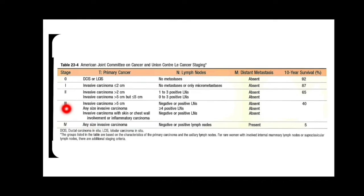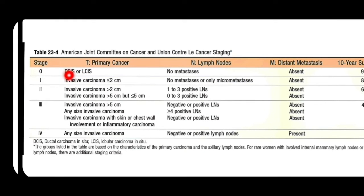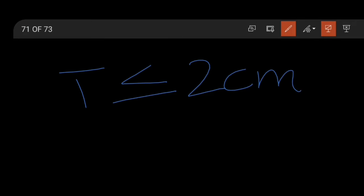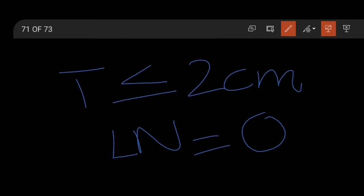Stage 0 is carcinoma in situ — ductal carcinoma in situ or lobular carcinoma in situ — where tumor cells are not invading the basement membrane. Stage 1 means the size of tumor is 2 centimeters or smaller, with no axillary lymph node involvement or only micrometastasis present.